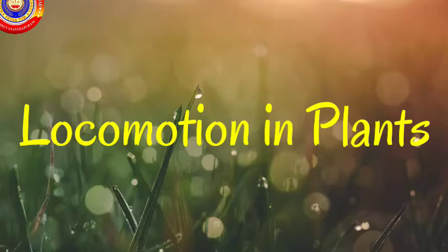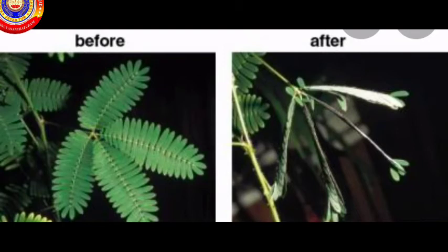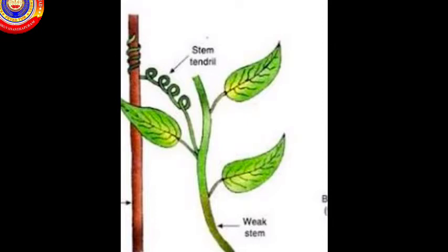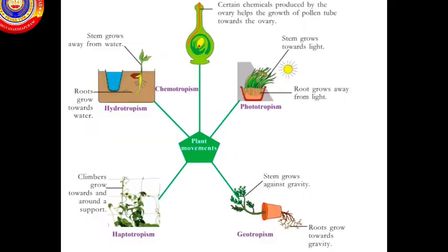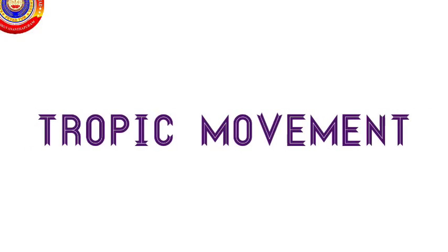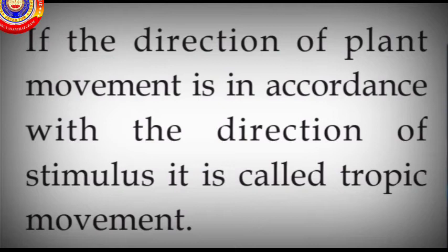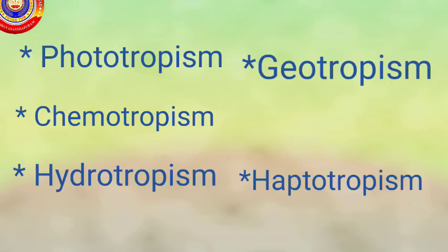Hello everybody, welcome back. In the last class we discussed different types of locomotions which take place in animals and other organisms. Plants also undergo locomotion. Tropic movement: if the direction of the plant movement is in accordance with the direction of stimulus, it is called tropic movement. Tropic movements are classified into phototropism, chemotropism, hydrotropism, geotropism, and haptotropism.